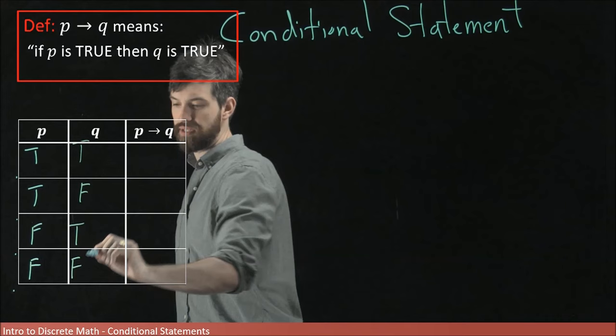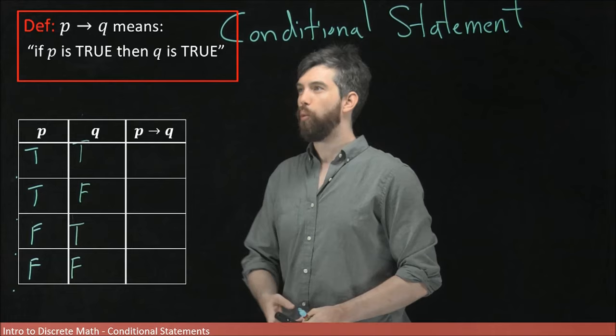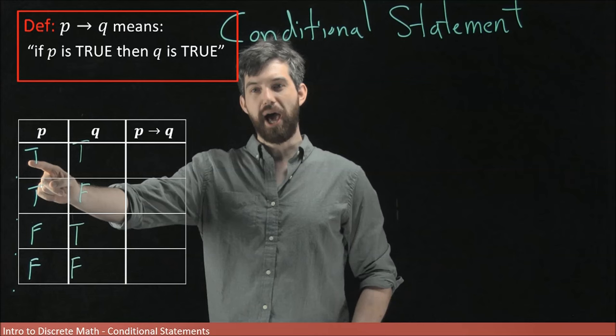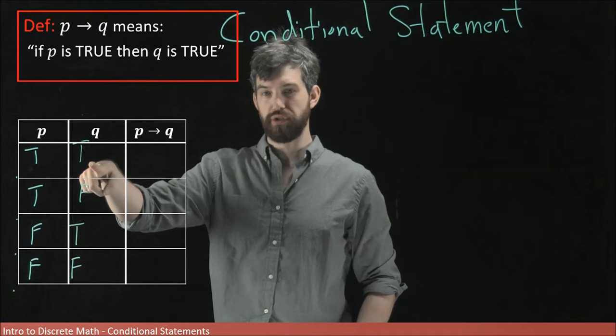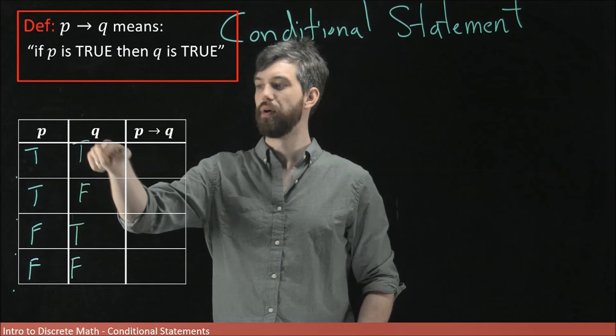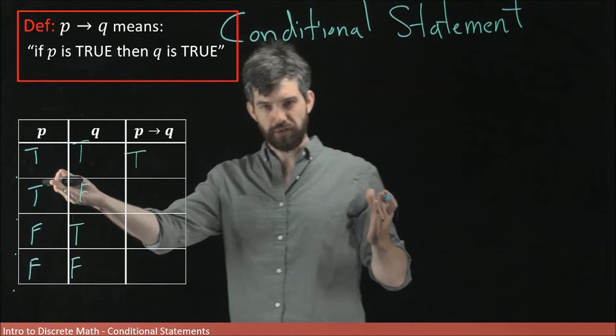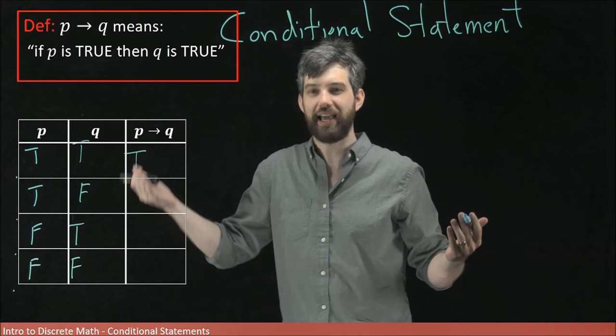The idea of the implication is that whenever the hypothesis is true, so too is the conclusion. In the first row, the hypothesis P is true and the conclusion is also true, so the implication is true. In the second row, the hypothesis is still true but the conclusion Q is false, so the implication is false — it's not the case that when P is true, Q is true.